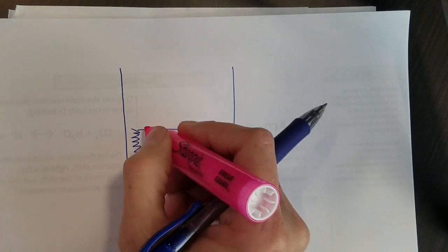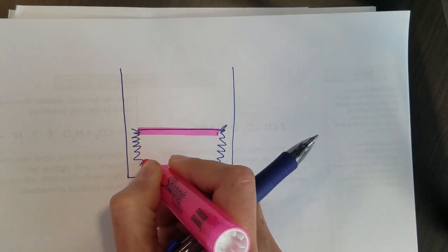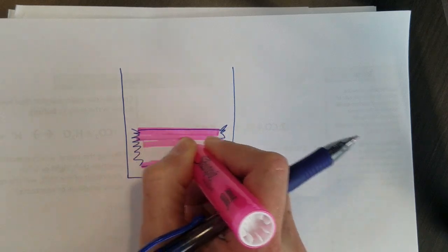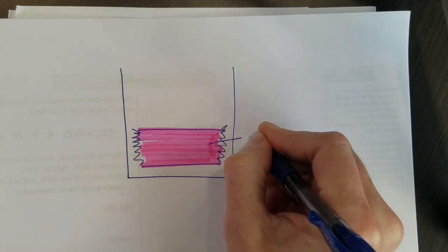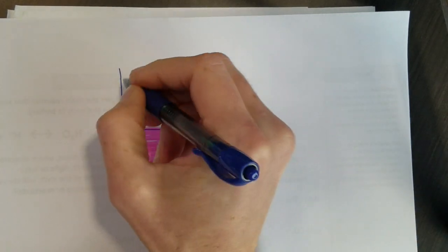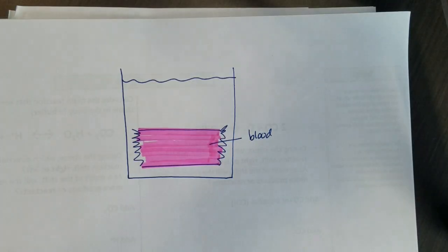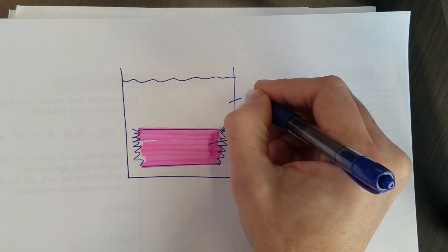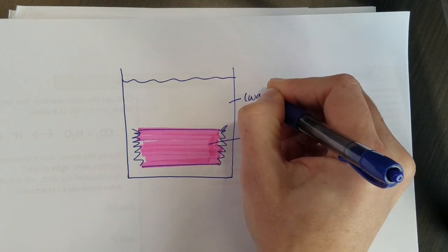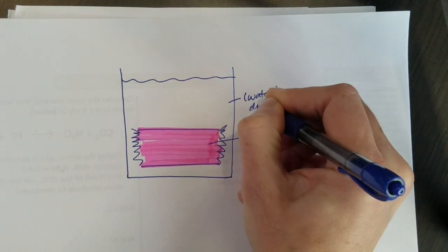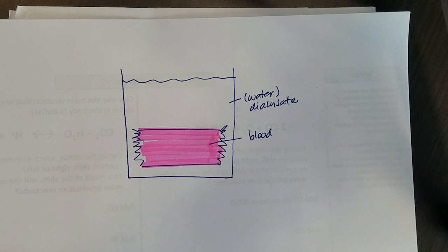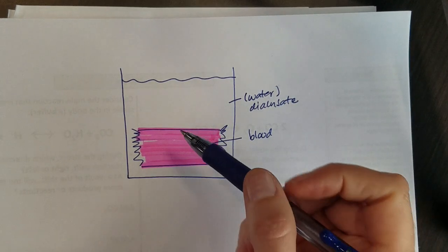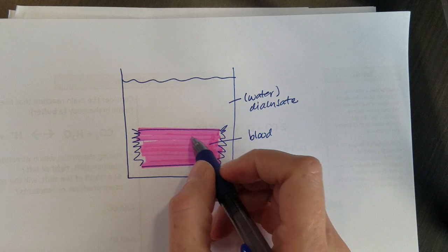This dialysis tubing is meant to mimic the portion of a dialysis machine that has blood in it, and then surrounding that is going to be water, or what we would call in a dialysis setup the dialysate.